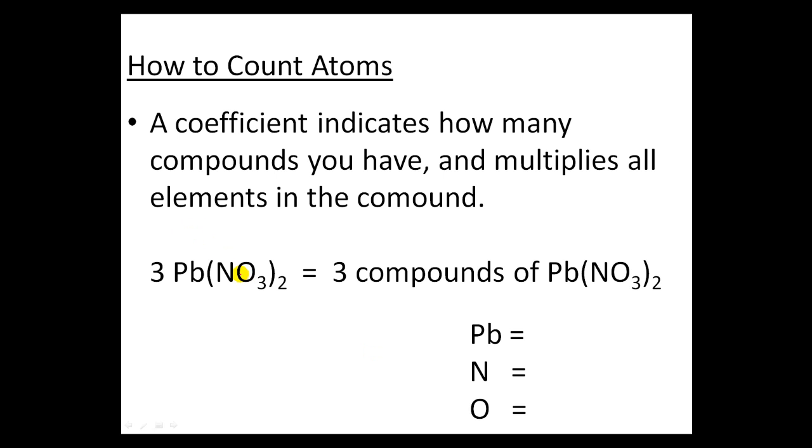The other number that you'll see is called a coefficient and it usually goes in front of the compound or molecule formula. A coefficient indicates how many compounds you have and multiplies all elements in the compound. So for instance this means that I have three Pb(NO3)2's - three lead nitrates. We like writing Pb(NO3)2 once, Pb(NO3)2 twice, and Pb(NO3)2 three times. But instead of doing that we just write a 3 in the front to show that we have three of these Pb(NO3)2's.